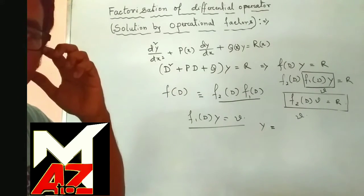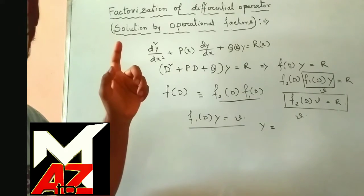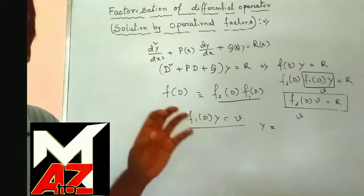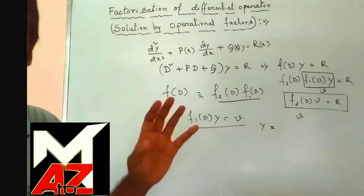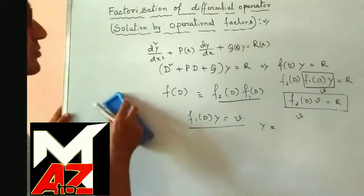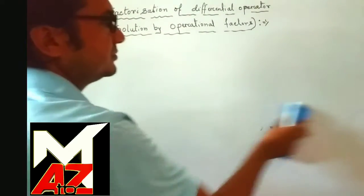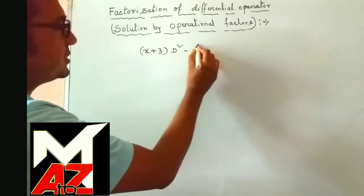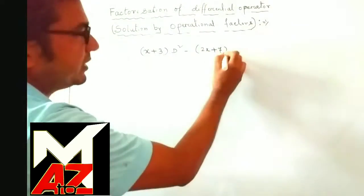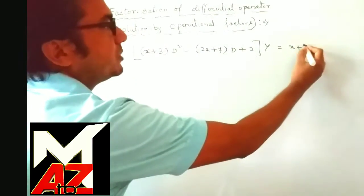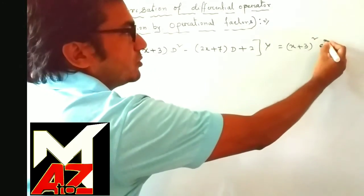To explain this method, we consider two important examples to solve by the factorization of differential operator method. We consider the first equation as: (x+3)D² − (2x+7)D + (x+2) times y equals (x+3)² · eˣ.